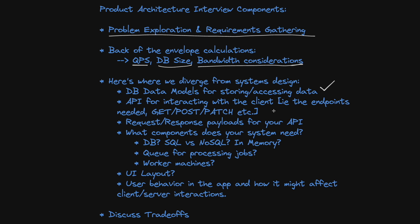You want to give a lot of detail on the actual APIs themselves. Similarly, you need to talk about what the request and response payloads are going to be for your APIs. What is each endpoint going to take in? What is it going to return? What are the HTTP status codes you need to be returning? What happens when something goes wrong — what are you going to return? What happens when something goes right — what are you going to return? These are all things you need to consider when talking about the API section.